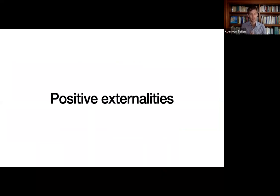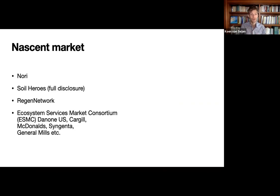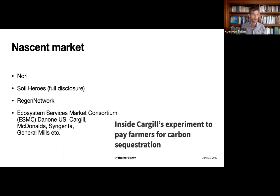Point five: positive externalities. There's a nascent but growing market starting to pay farmers for water storage, biodiversity increases, environmental outcome bonds, social impact bonds, carbon credits, and carbon removal. Examples include Nori, Soil Heroes, and the Regen Network — all marketplaces trying to pay farmers for one or multiple ecosystem services. Full disclosure: I'm an advisor at Soil Heroes. There are also specific marketplaces like the ESMC, where Cargill, McDonald's, Syngenta, and General Mills are participants. We'll do a full video on ecosystem services and paying farmers for them.